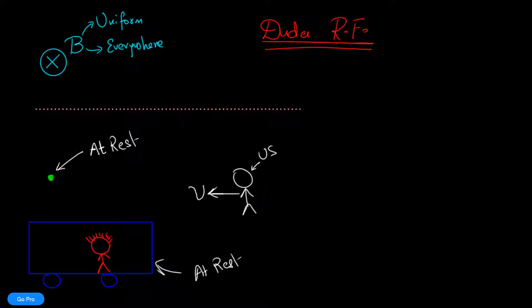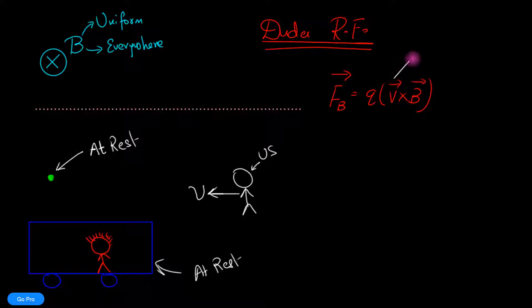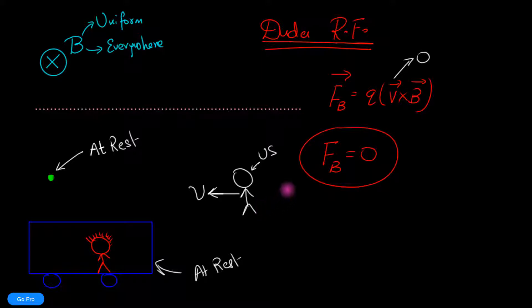So what's the big deal? The big deal is what happens when he calculates the Lorentz force on the charged particle. He uses the same formula: Q times V cross B. But according to him, the velocity of the charge is zero because the charge is not moving. Therefore, he concludes the Lorentz force is zero, and that charge particle will remain at rest forever.